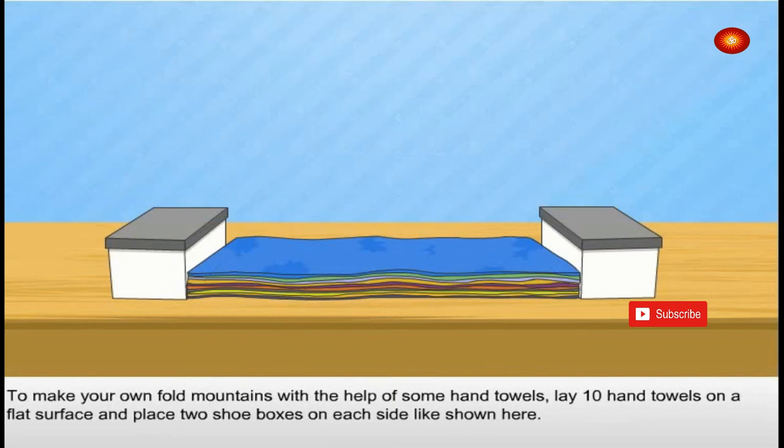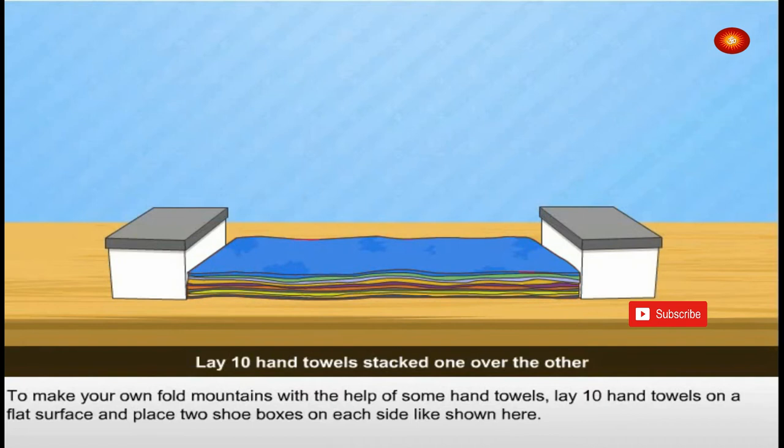To make your own fold mountains with the help of some hand towels, lay ten hand towels on a flat surface and place two shoe boxes on each side like shown here.